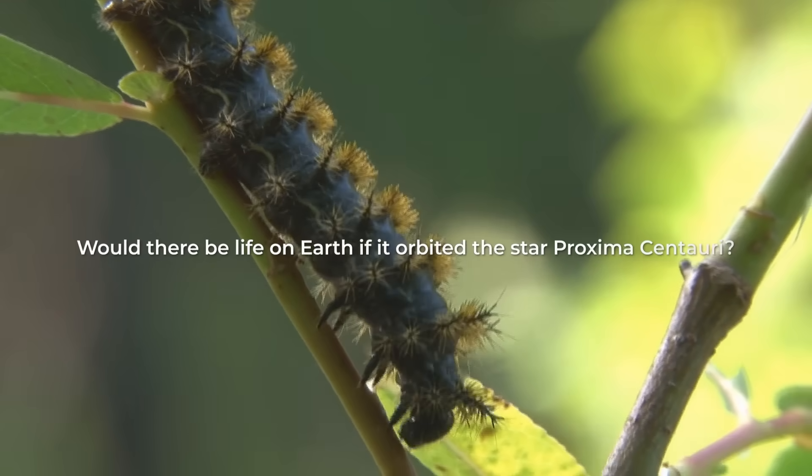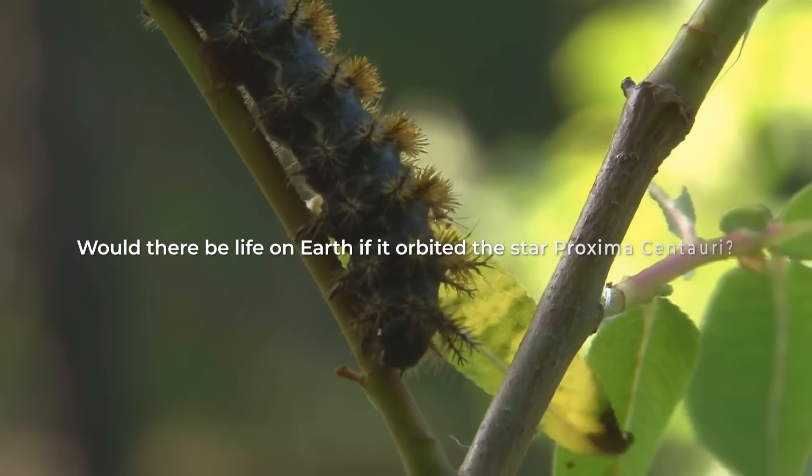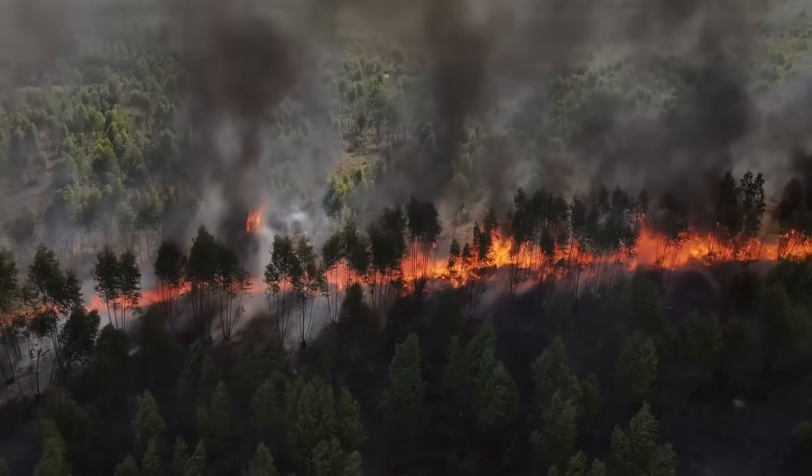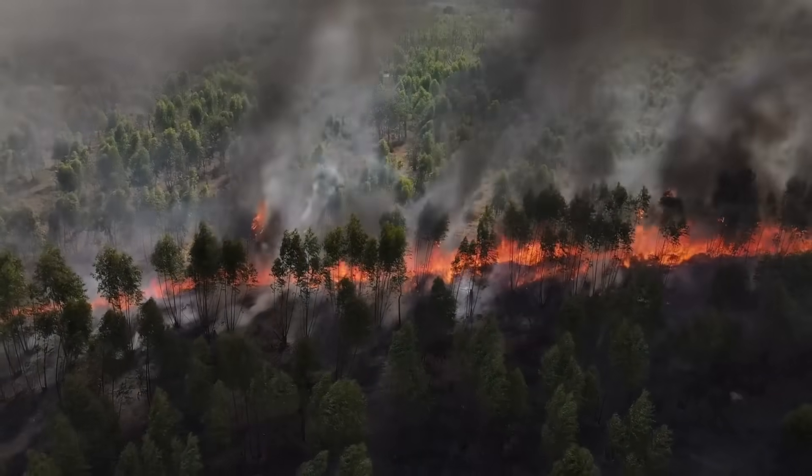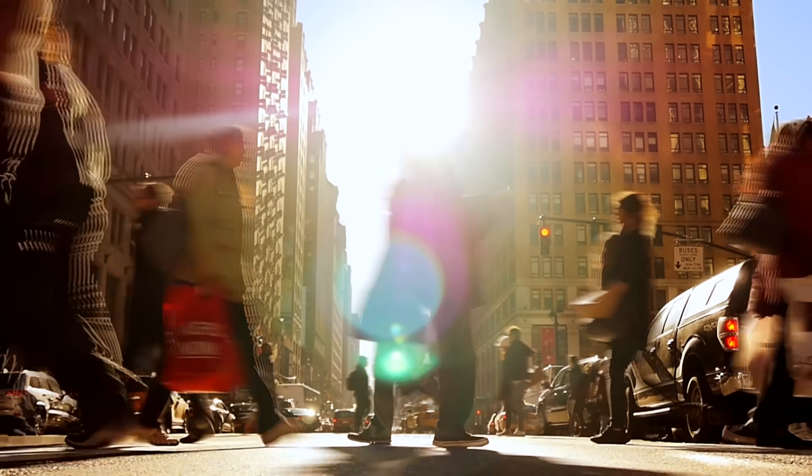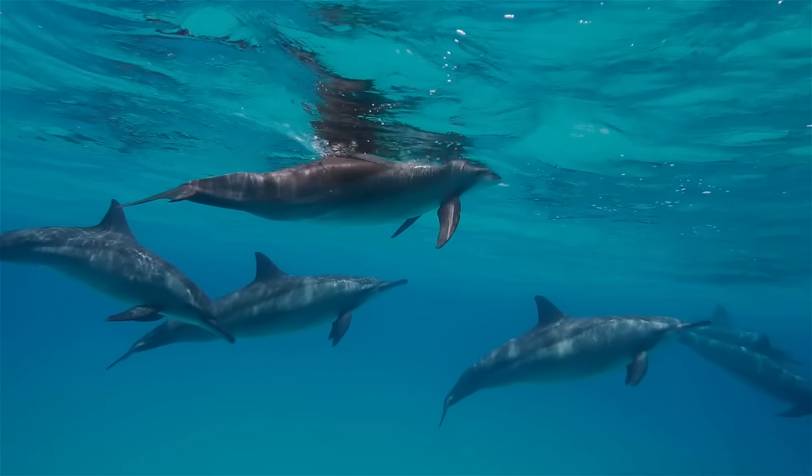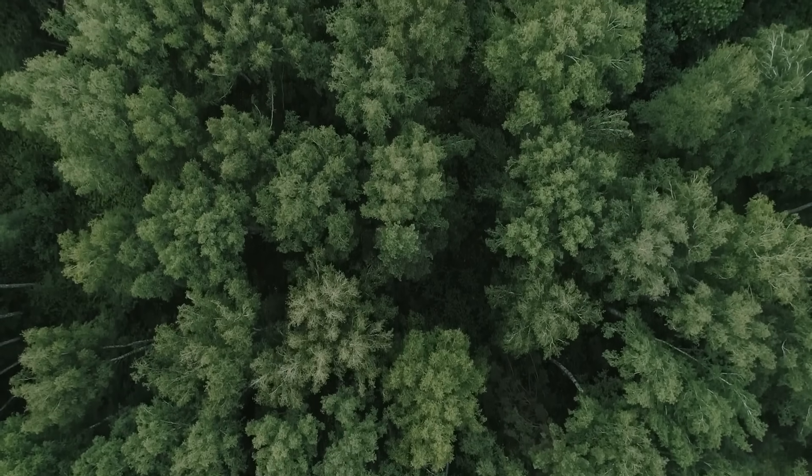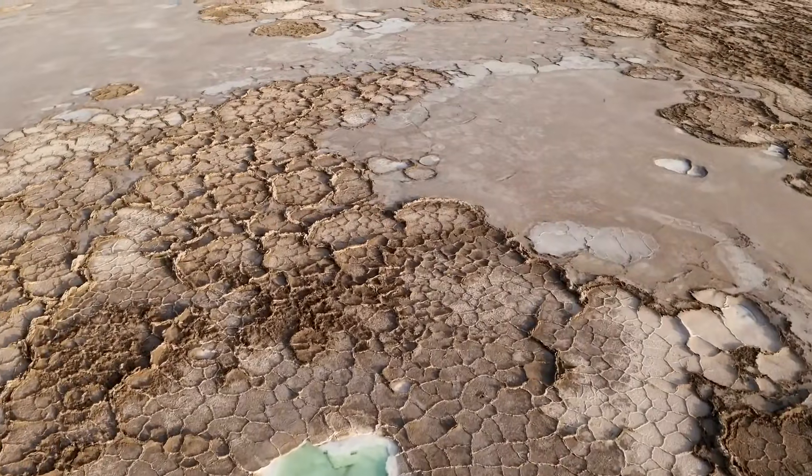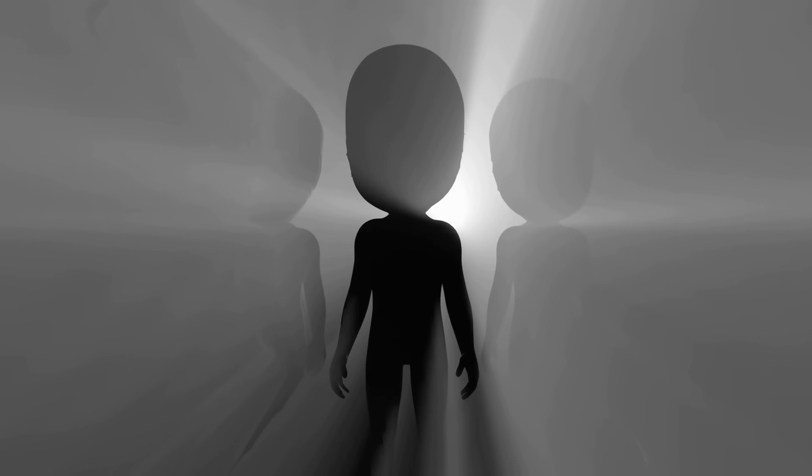Would there be life on Earth if it orbited under these specific conditions, including suitable temperature, atmospheric pressure, radiation, and light? If conditions are very different from those we know, life is unlikely to survive. At least, the life we know. It would be necessary to see if another type of life can survive in these very different conditions.